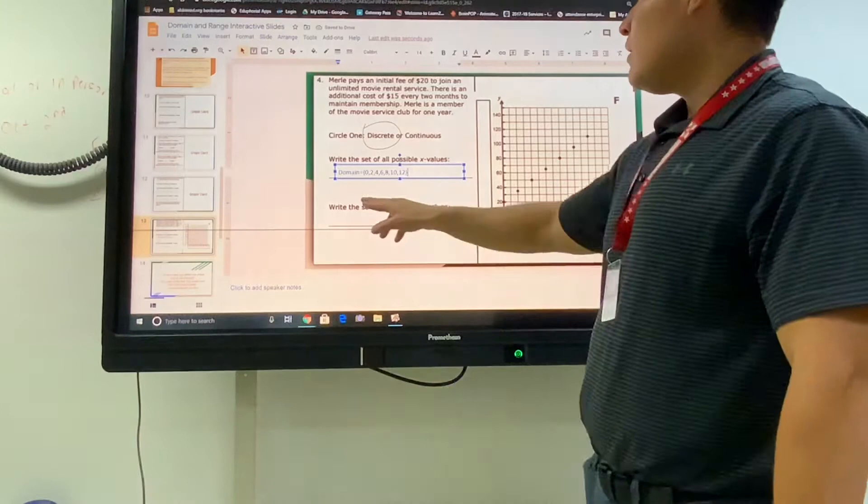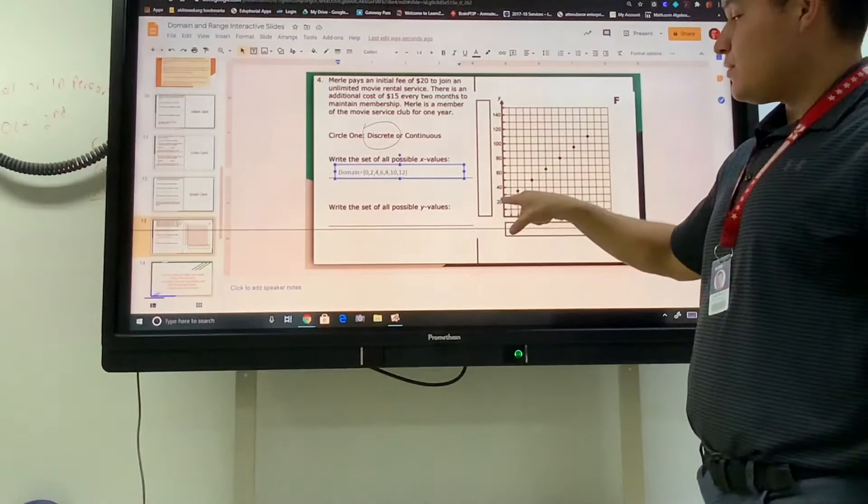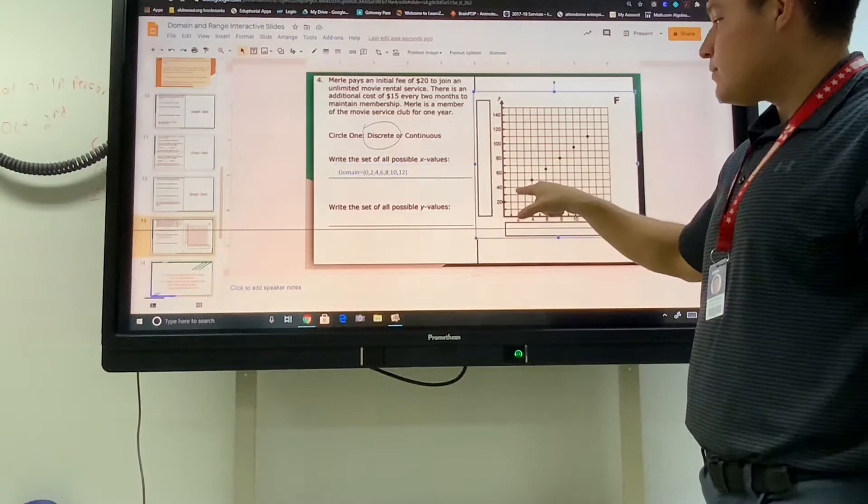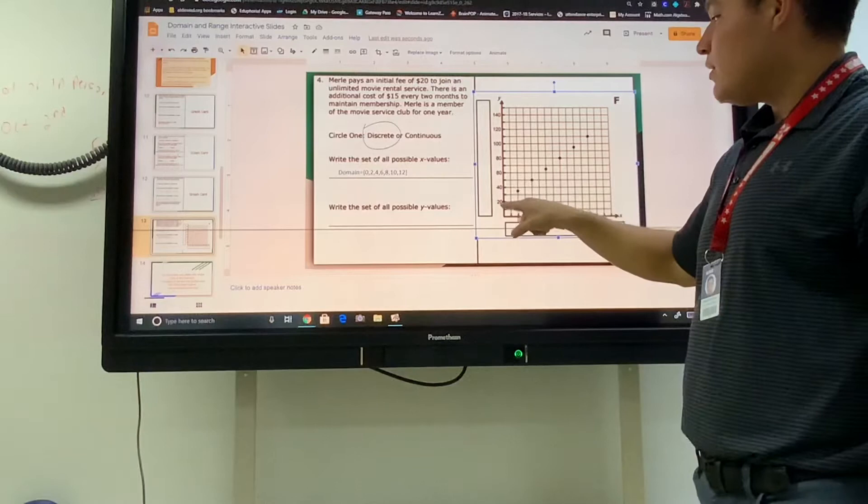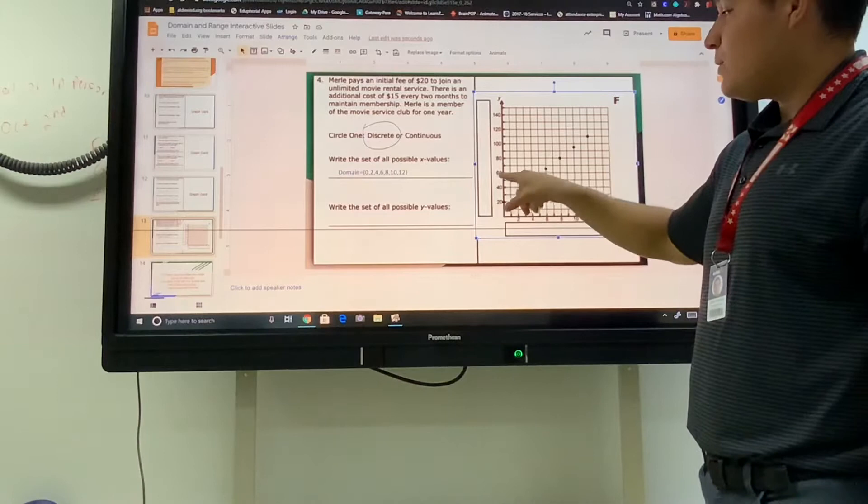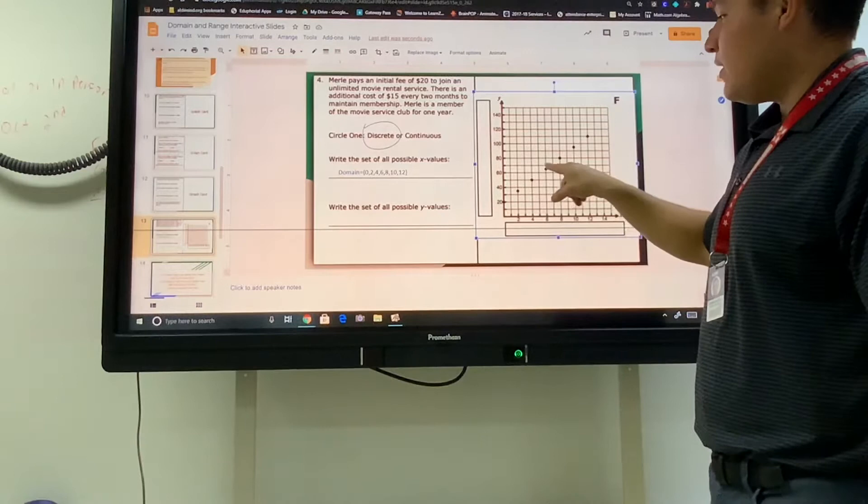Now we're going to write all of the y values. If we look at the dots, the first dot has a y of 20. Then that one I don't know, but then this one over here is, I follow it over, this is counting by 10s. Halfway between 40 and 60 is 50, so I have 20 and then I have 50.